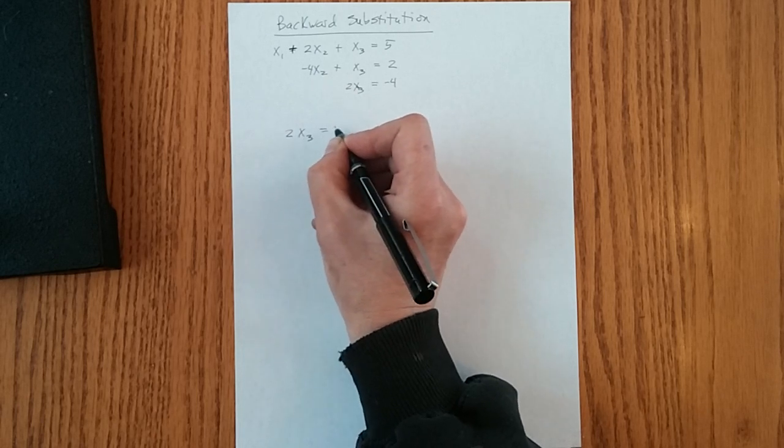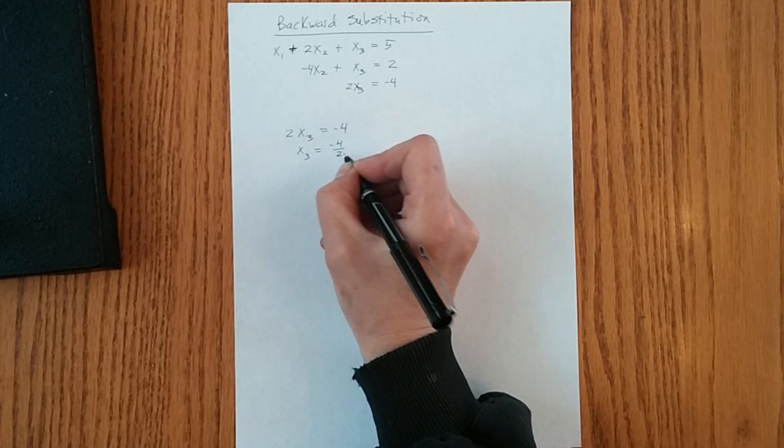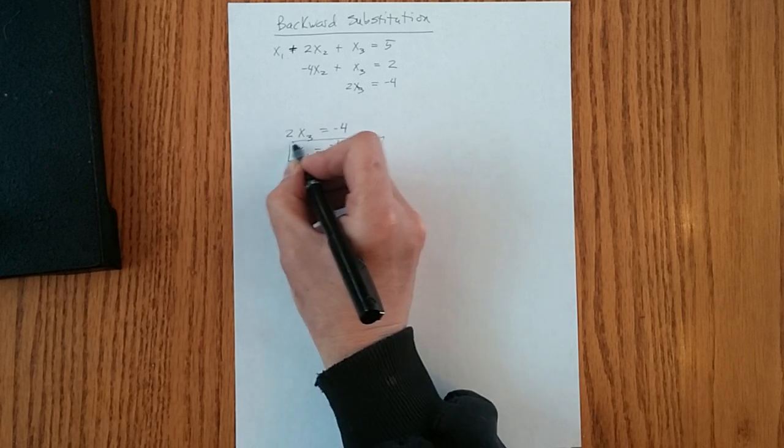2x sub 3 equals minus 4. So x sub 3 equals minus 4 over 2 equals minus 2. It's our first solution.